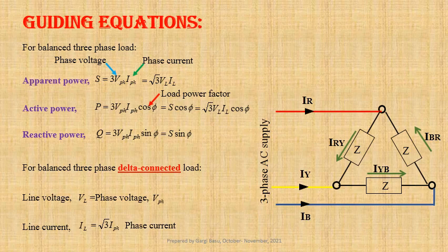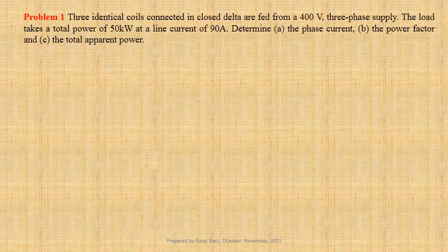For balanced three-phase delta connected load, line voltage V-L equals phase voltage V-phase, and line current I-L equals root three times I-phase, where I-phase is the phase current. We can write apparent power S equals root three times V-L into I-L, active power P equals root three times V-L into I-L cos φ, and reactive power Q equals root three times V-L into I-L sin φ.